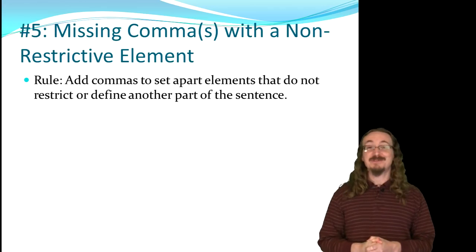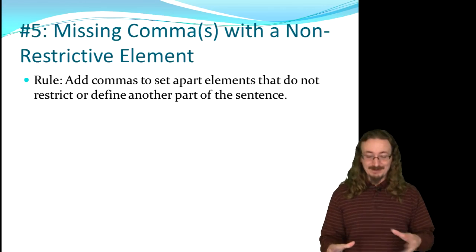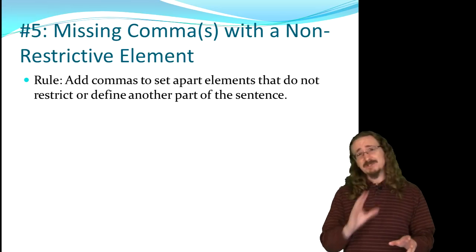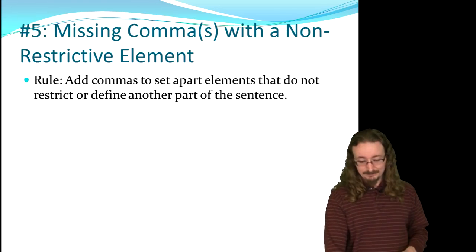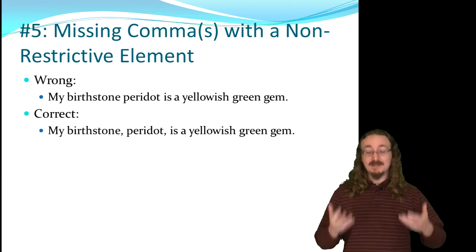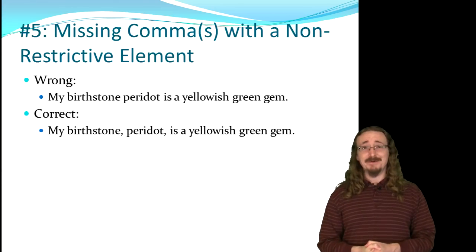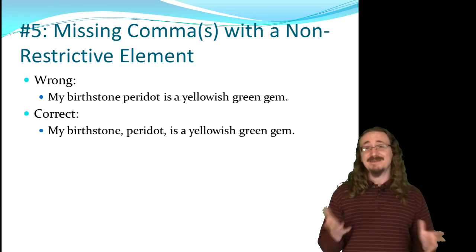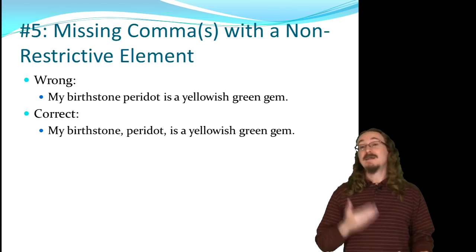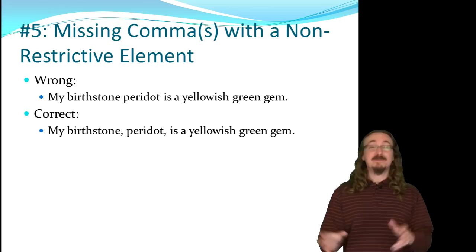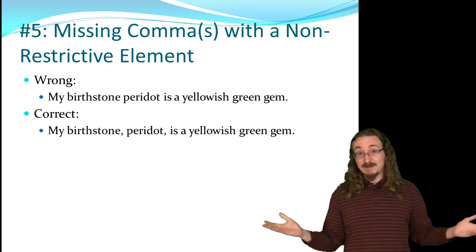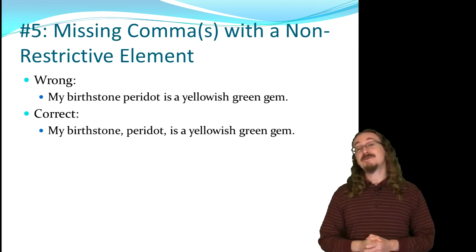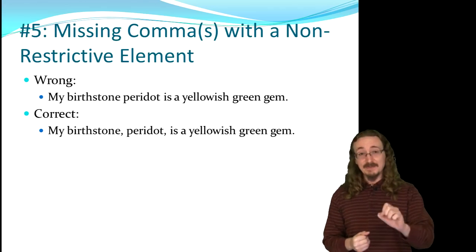Number 5: missing commas with non-restrictive elements — the opposite of error #17. Put commas around an element if you don't need it to restrict or define meaning. For example: 'My birthstone, peridot, is a yellowish green gem' — you can only have one birthstone, so 'peridot' is non-restrictive and needs commas. Similarly, 'my oldest brother' gets commas around his name since you can only have one oldest brother. But if you have three brothers and just say 'my brother,' you need the name without commas to specify which one.